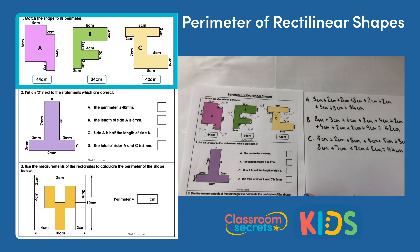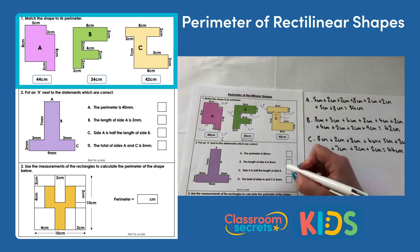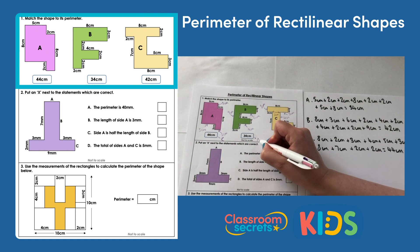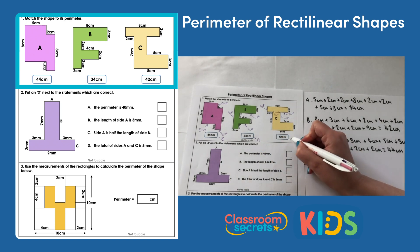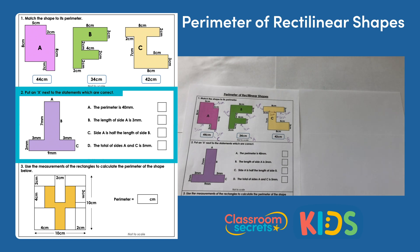So I can now match each shape to its perimeter: 44 centimetres was shape C, 34 centimetres was shape A, and 42 centimetres was shape B. Let's have a look at question two: put a cross next to the statements which are correct. We have four statements — A: the perimeter is 40 millimetres; B: the length of side a is 3 millimetres; C: side a is half the length of side b; and D: the total of sides a and c is 5 millimetres. We have three missing values to find.